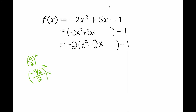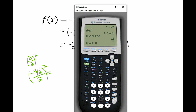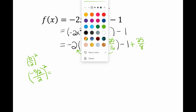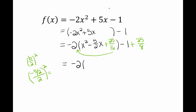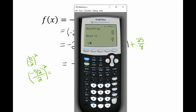Put plus 25 over 16 inside the parentheses. To find what goes on the outside, multiply negative 2 times 25 over 16, which gives negative 25 over 8. Since you must put the opposite on the outside, put positive 25 over 8. Now factor: square root of the first minus square root of the last gives x minus 5 over 4. Group together minus 1 plus 25 over 8, which gives 17 over 8. The vertex is positive 5 over 4, positive 17 over 8.